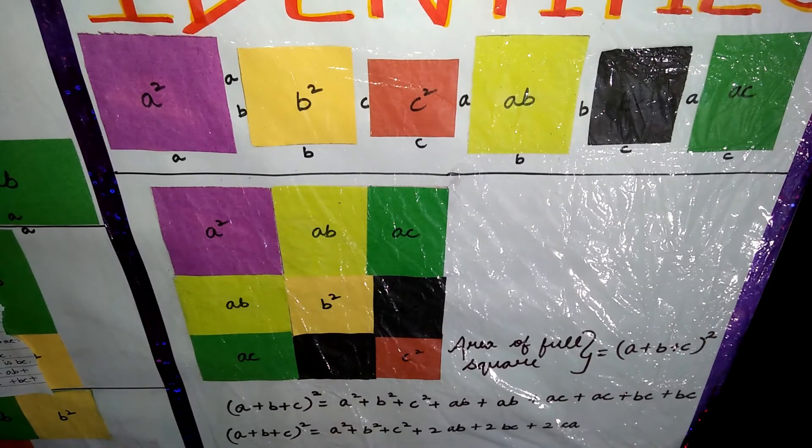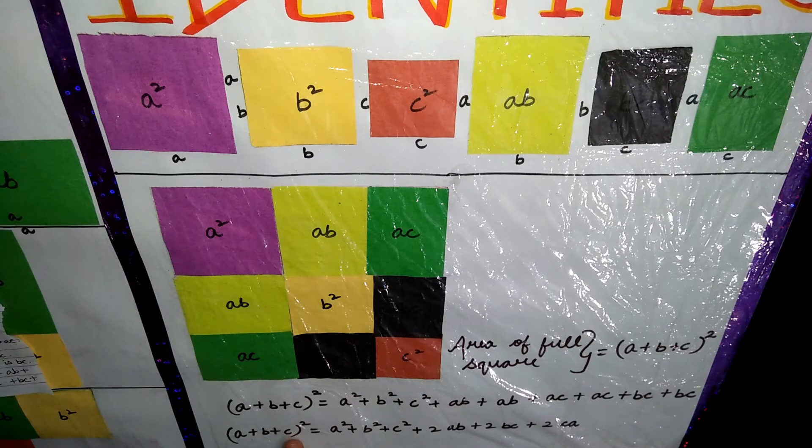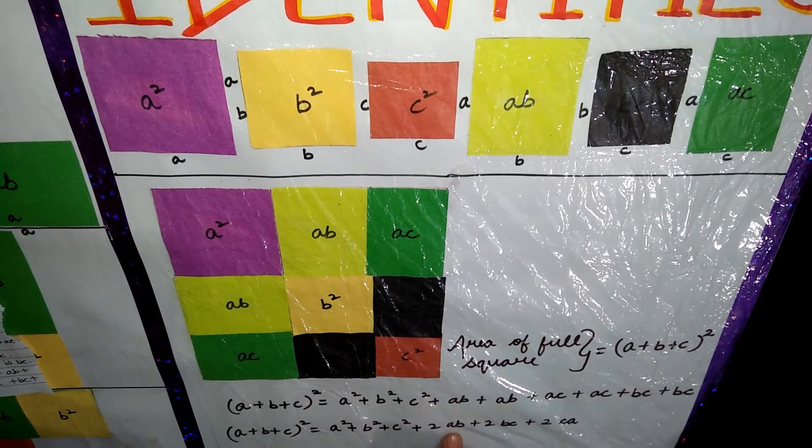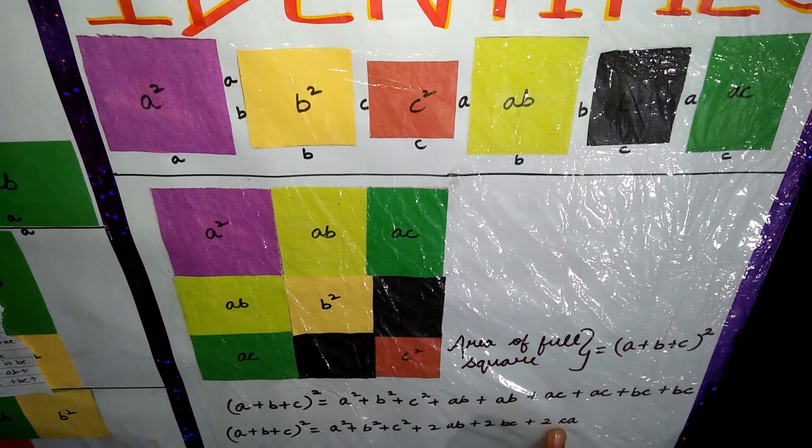Now third identity is a plus b plus c whole square equals to a square plus b square plus c square plus 2ab plus 2bc plus 2ca.